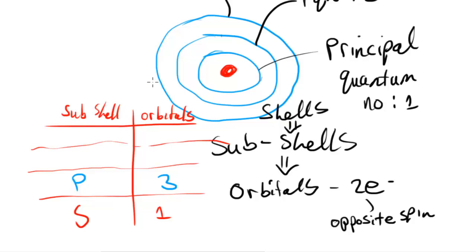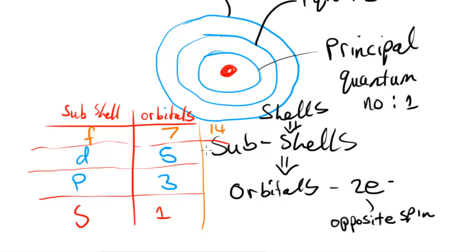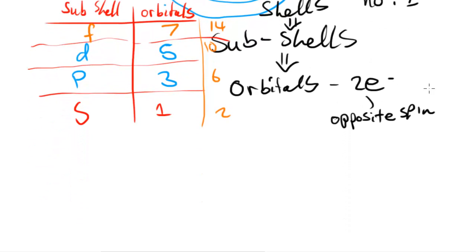Following on from the p subshell we have the d subshell, which contains five orbitals — so 10 electrons (five times two). And following on from the d subshell we have the f subshell, which contains seven orbitals — giving 14 electrons (seven times two). The s and p orbitals have slightly different shapes, which I'll go into in the next video.